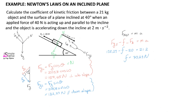The question asks us to calculate the coefficient of friction, so we use the formula: friction equals the coefficient of friction multiplied by the normal force. Our frictional force is 70.29 Newtons, the coefficient is our unknown, and the normal force — equal to the perpendicular component of gravity — is 157.65 Newtons. Solving for the unknown coefficient of friction gives 0.45. Coefficients of friction have no units because it is a ratio.